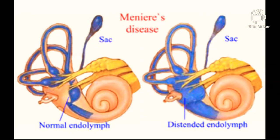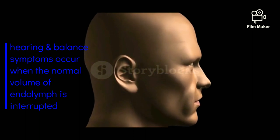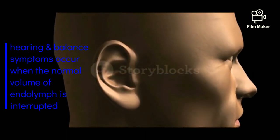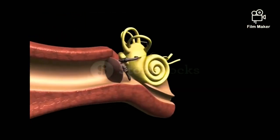What are the causes of Meniere's disease? Meniere's disease is usually caused by dilation or swelling of the endolymphatic sac, affecting the drainage of endolymph or other tissues in the vestibular system of the inner ear, which is responsible for the body's sense of balance. Hearing and balance symptoms occur when the normal volume of endolymph is interrupted. Endolymph is stored and absorbed in the endolymphatic sac, which is believed to play an important role in the inner ear immune response.